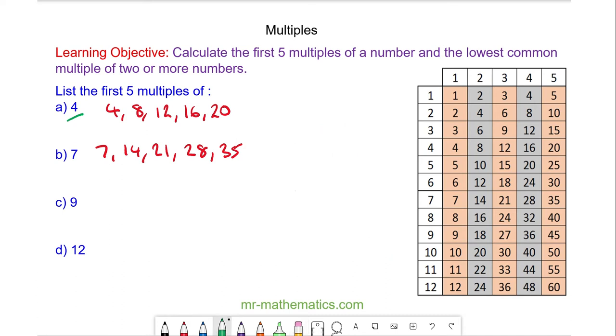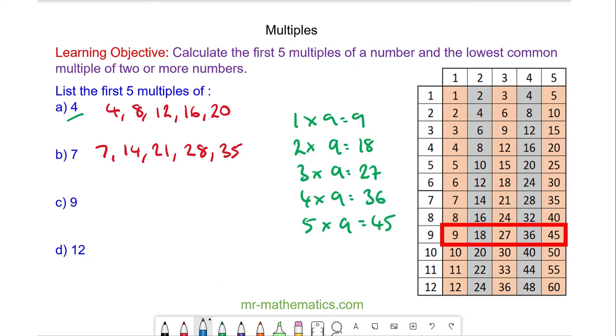Okay, so the first five numbers in the 9 times table are 9, 18, 27, 36 and 45. You can see we are simply adding 9 every time.